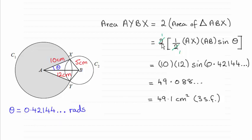So I used then the 2 times ½ what we call AB sine C, that formula there. So it's half the product of the two sides, AX which is 10, times AB which is 12 centimeters, and then the sine of the included angle.